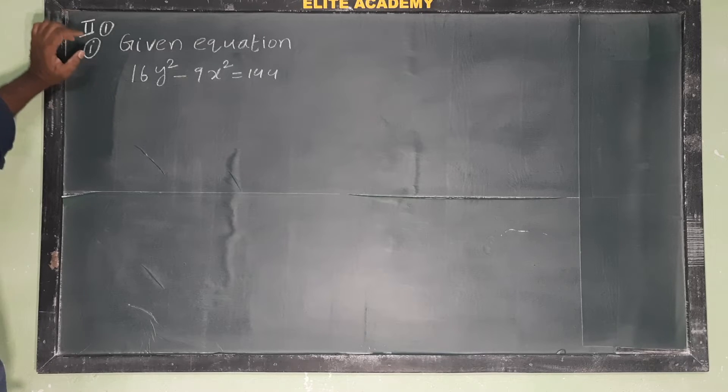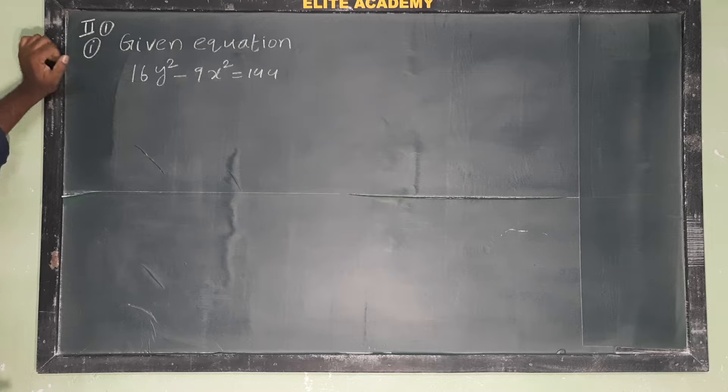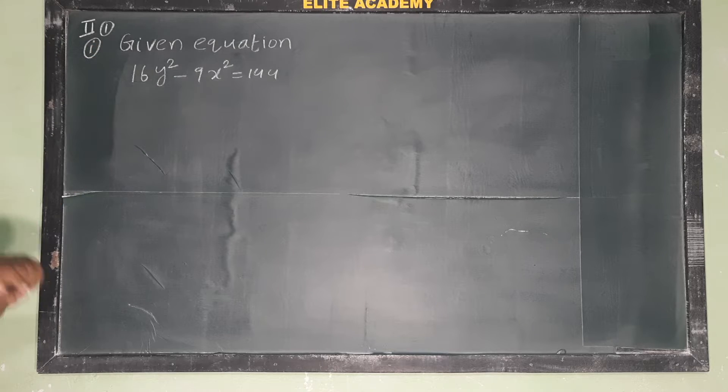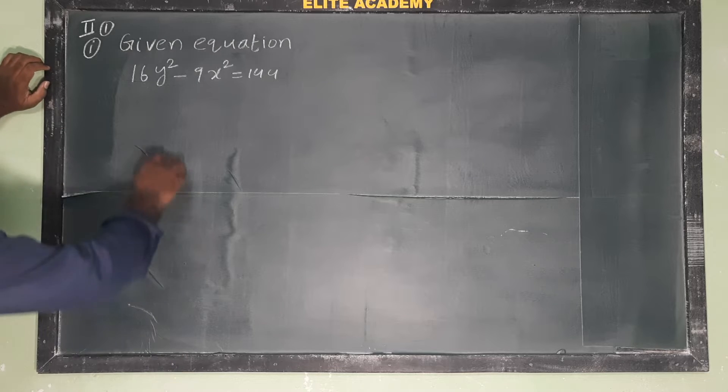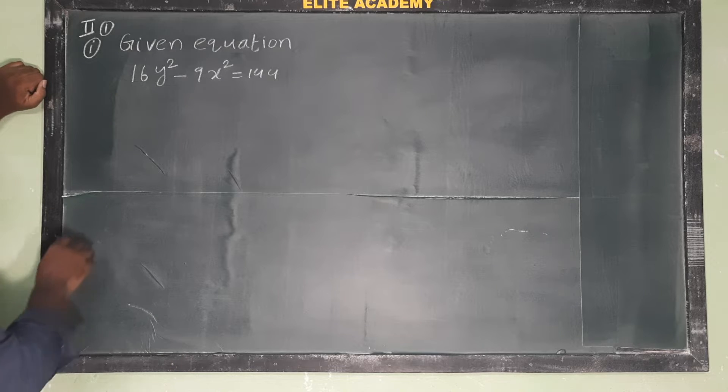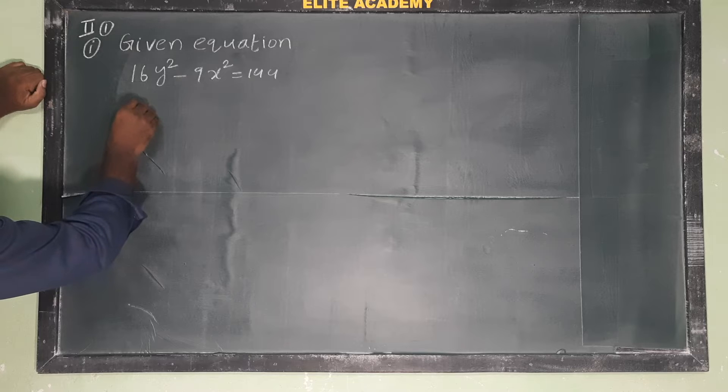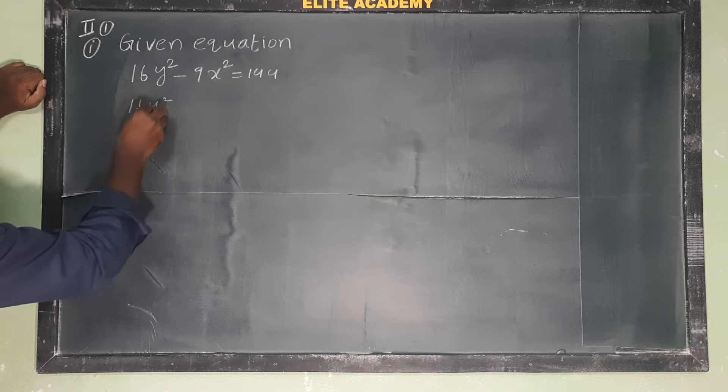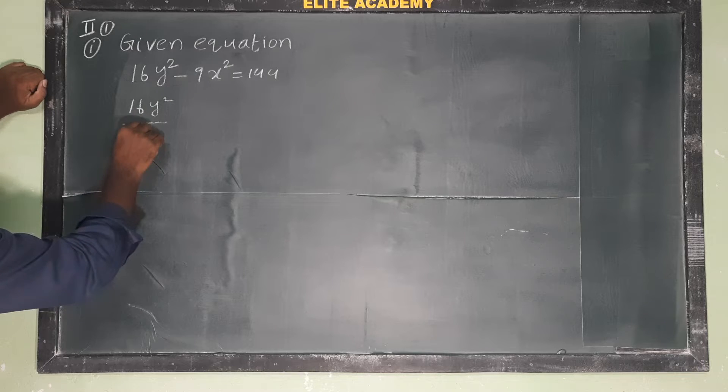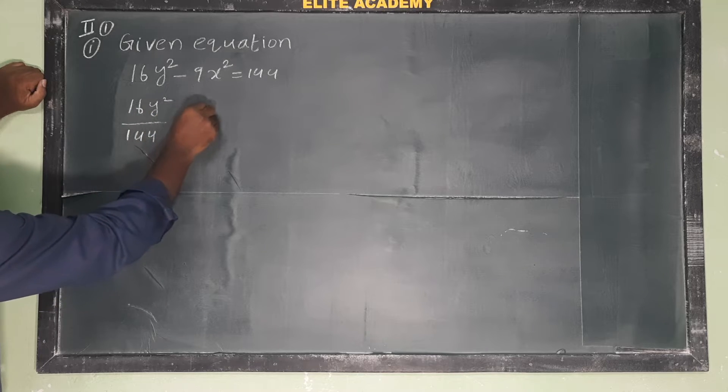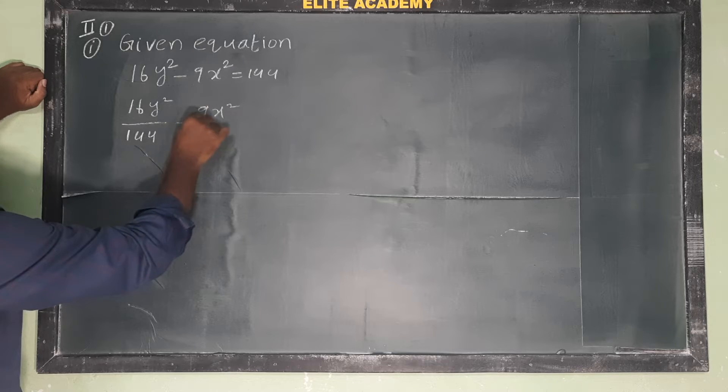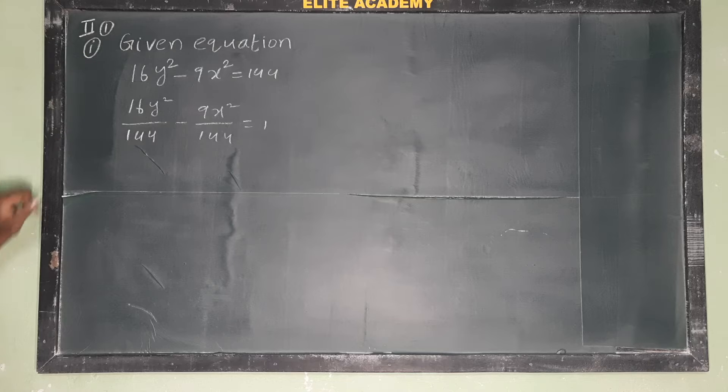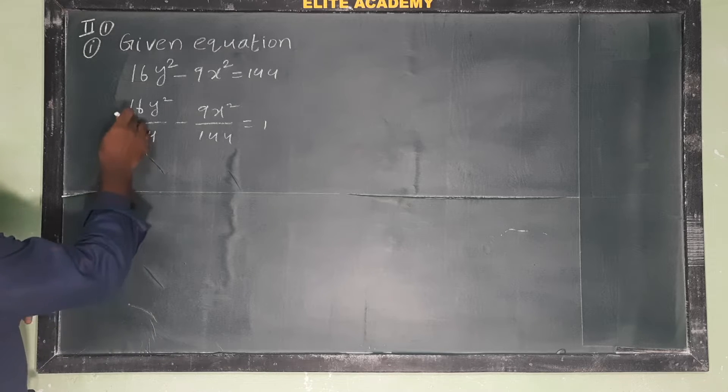Okay, second problem on hyperbola. Given equation 16y² - 9x² = 144. To convert to standard form, divide the entire equation by 144. So 16y² by 144 minus 9x² by 144 equals 1.